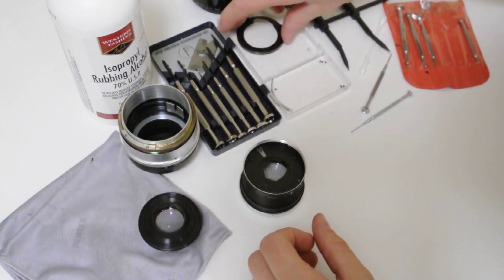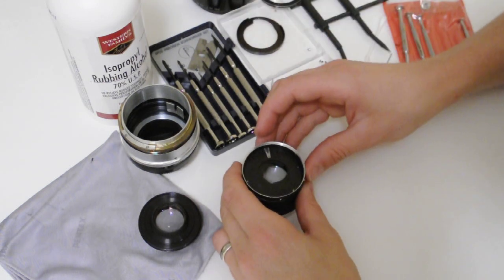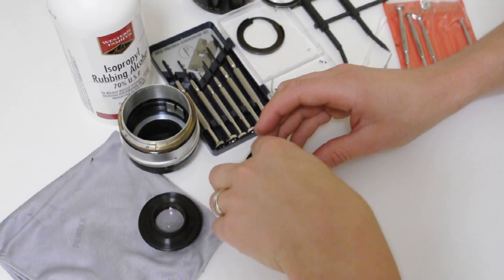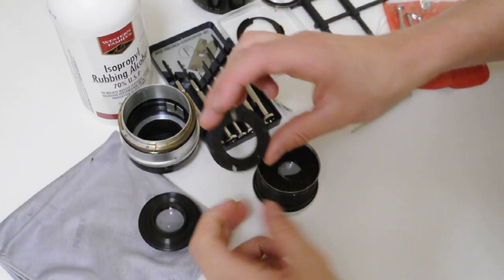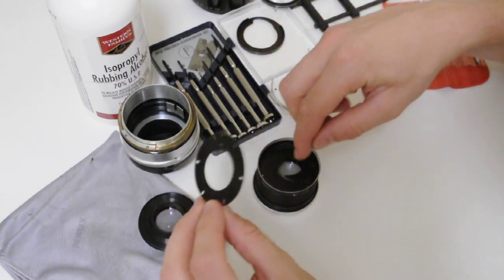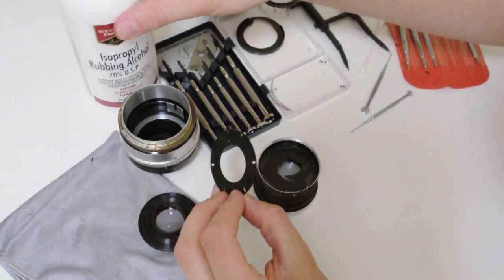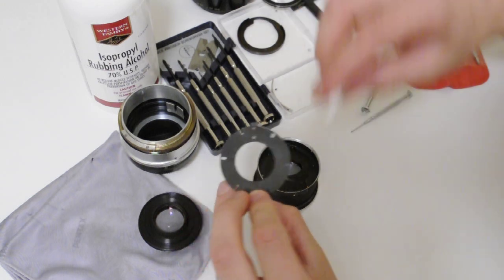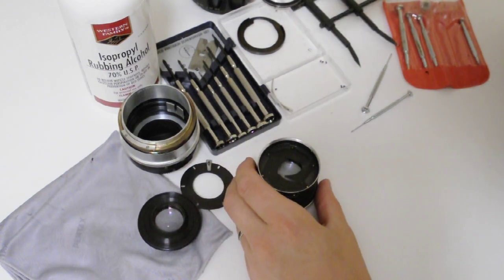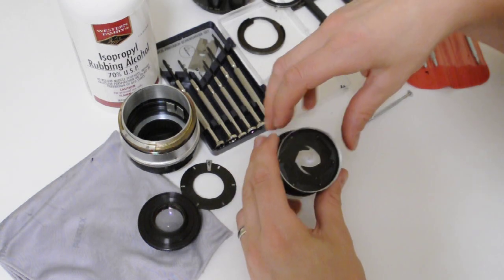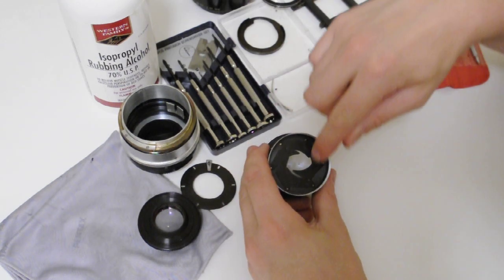Now this guy will pull out and you'll want to clean this and the aperture blades with alcohol. I use a Q-tip very gently. Alcohol is super safe, it's very gentle, but it still gets rid of the oil.